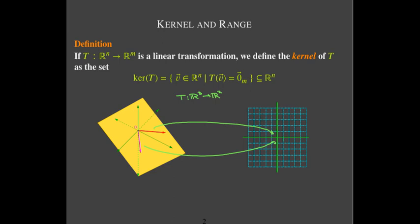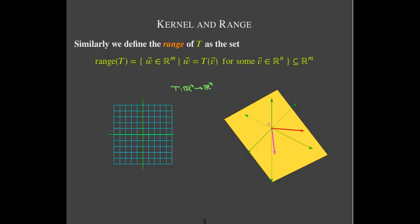Getting mapped to the zero vector in my picture would mean that it gets mapped onto the origin. Now the range lives in the output space — the kernel lives in the input space, but the range lives in the output space. The range is just the set of all images of vectors in the input space.